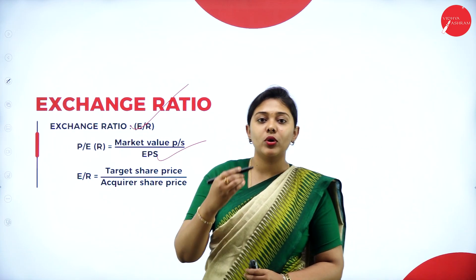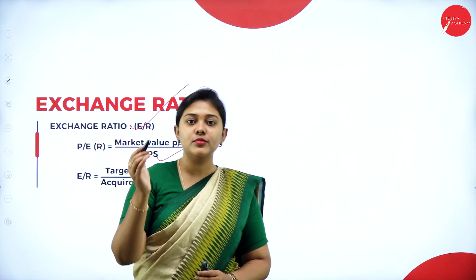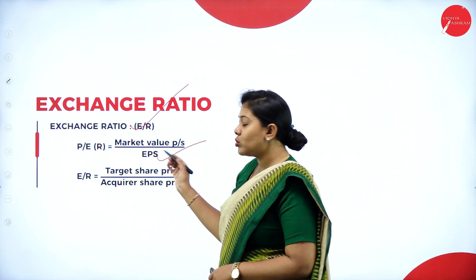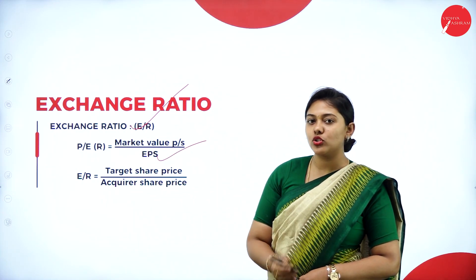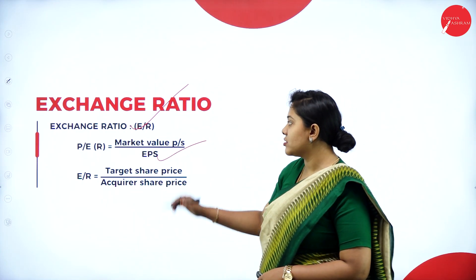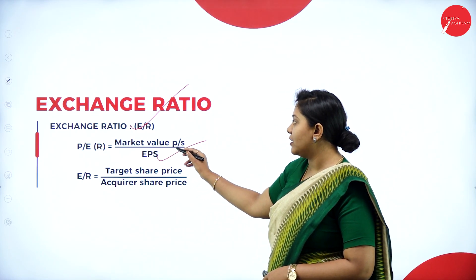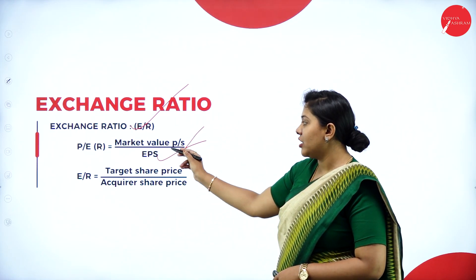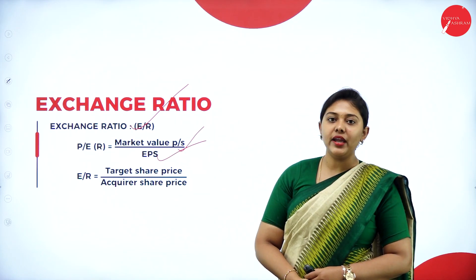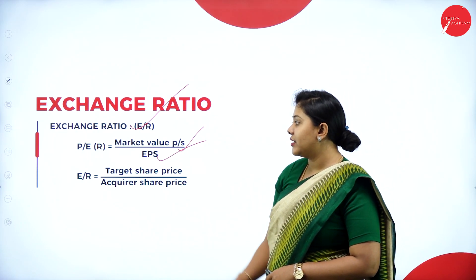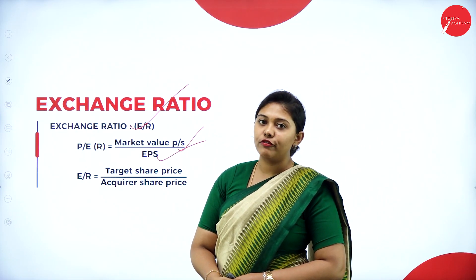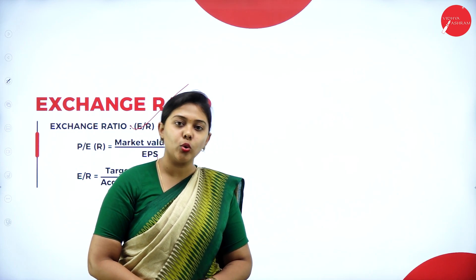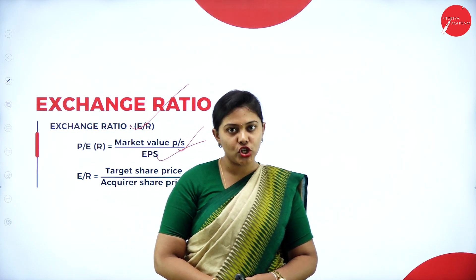In today's class, we look at problems on price-to-earning ratio. The formula for price-to-earning ratio is: market value per share divided by EPS. To calculate EPS, we use another formula: profit after tax divided by total number of shares.